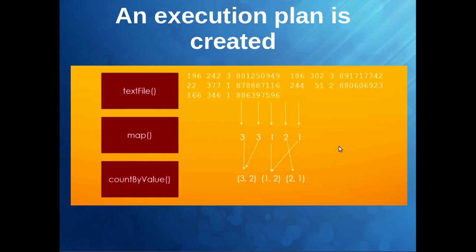When you apply the countByValue action, Spark has to shuffle the data. It has to send data back — for example, where is the count for rating 3? It will be sent to the final result. The count for rating 2 will also go to the final result in order to get the total count. This entire operation is called shuffling in Spark — Spark has to move your data across different nodes to get the final count. This operation is very costly because shuffling involves network transfer of data from one node to another.